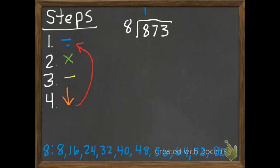So if we have 8 hundreds divided into 8 groups, they're all going to get 1. Second step. Multiply. 1 times 8 is 8. Third step. Subtract. 8 subtract 8 is 0. Fourth step. Bring down.